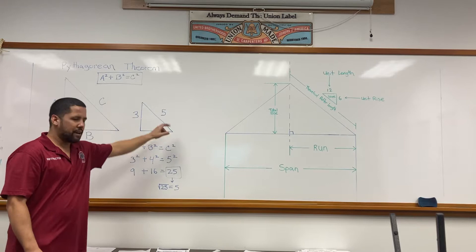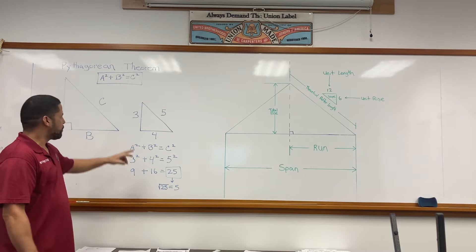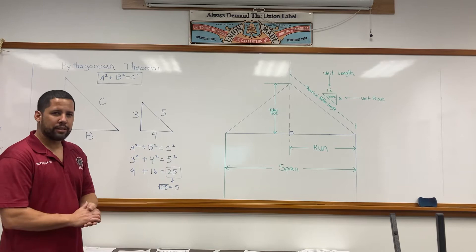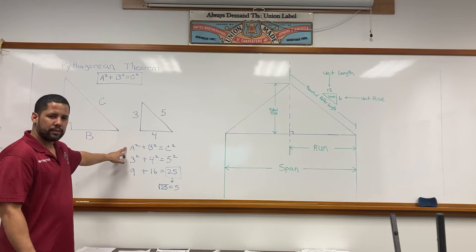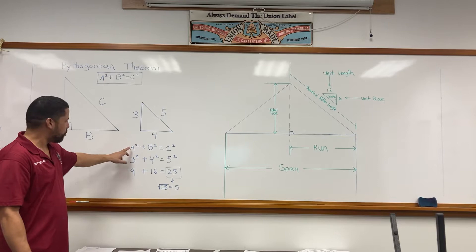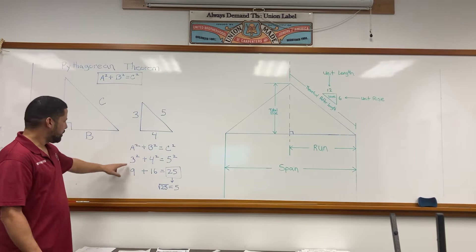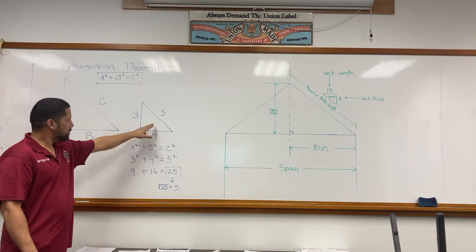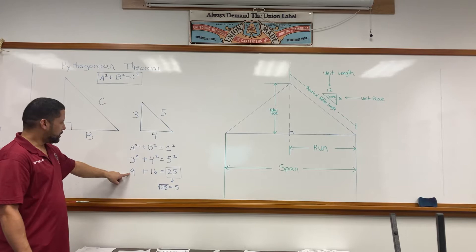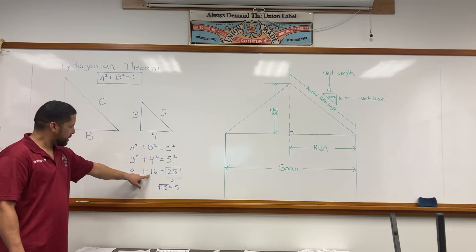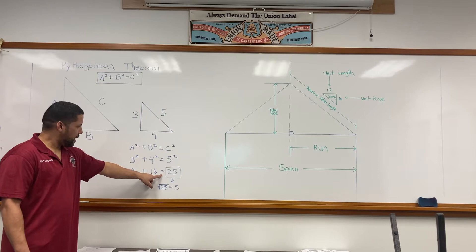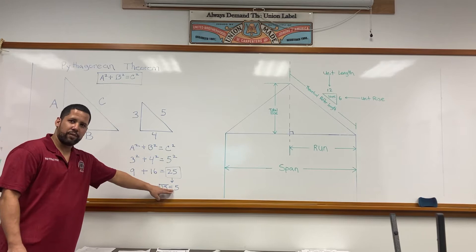A perfect example is the 3-4-5. We know to square up a wall or floor, we always teach using the 3-4-5 method or any increments of 3, 4, and 5. Easiest way to understand is to write your equation out: a² + b² = c². So 3² + 4² = 5². Three times three is 9, plus 4 times 4 is 16, and 5² is 25. Take the square root of 25 and that gives you 5.